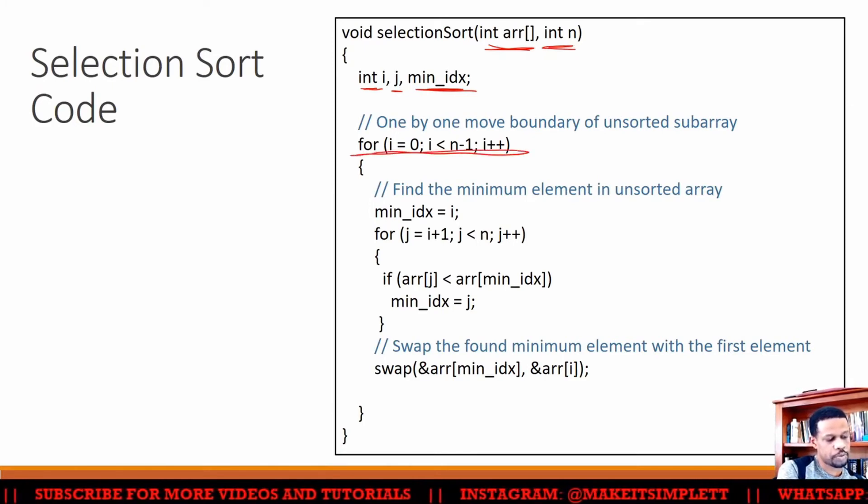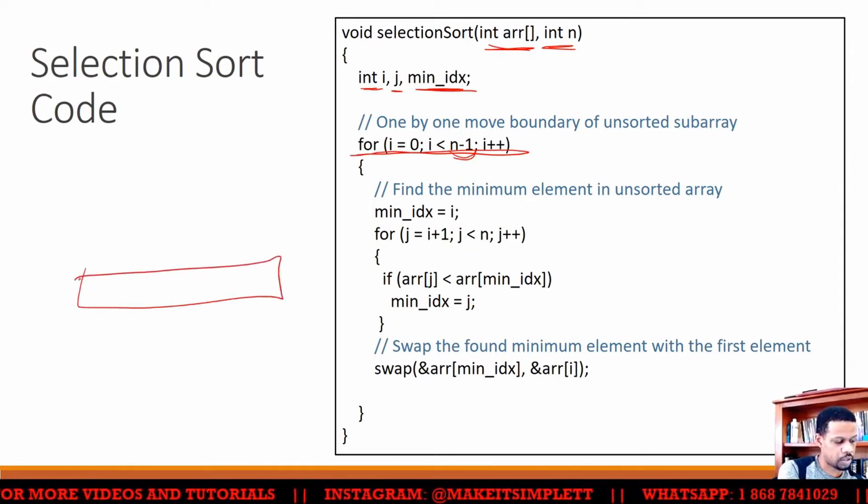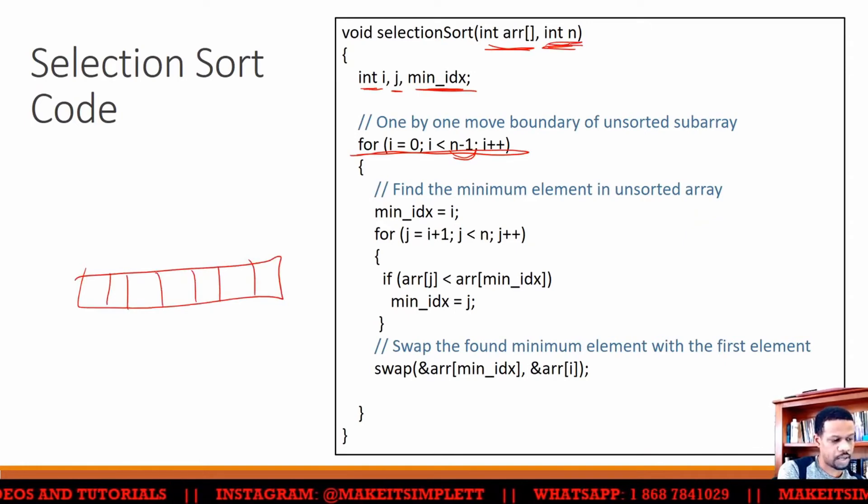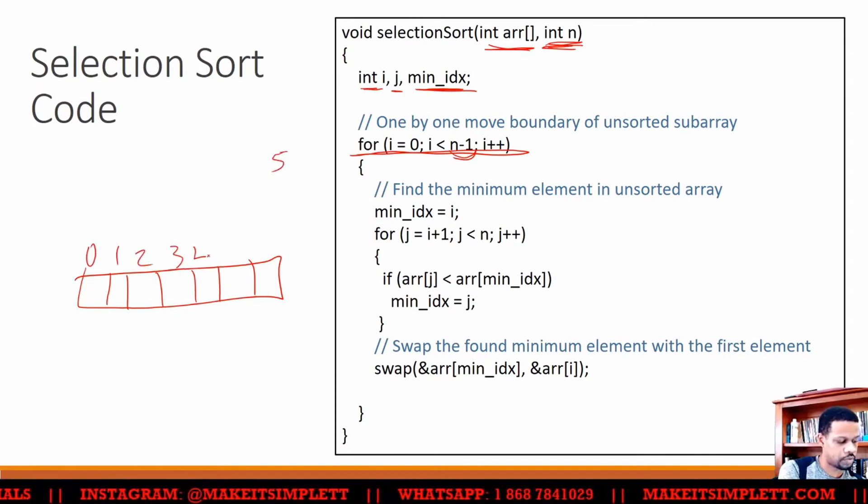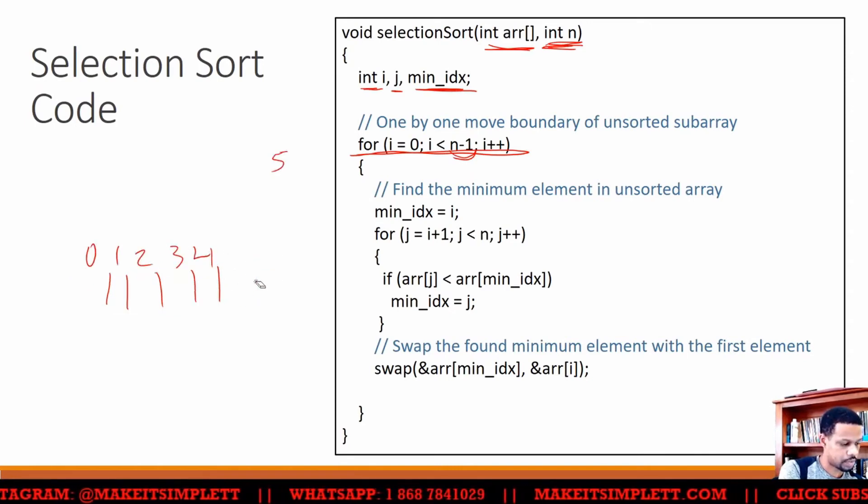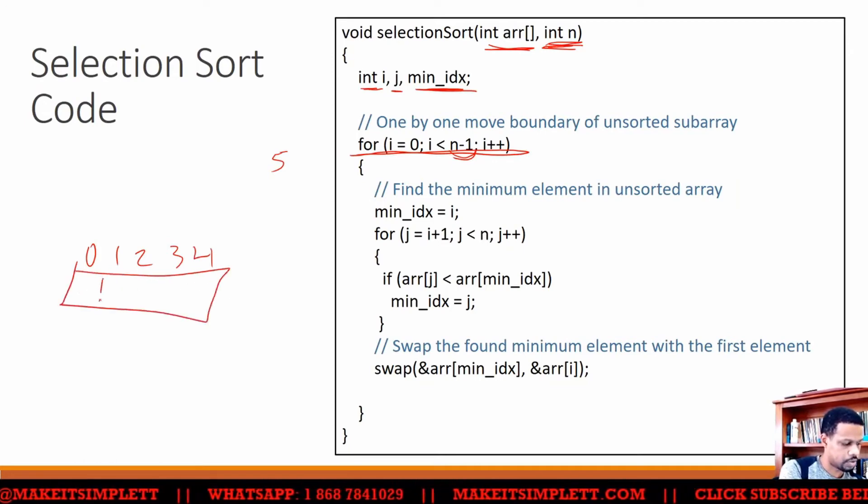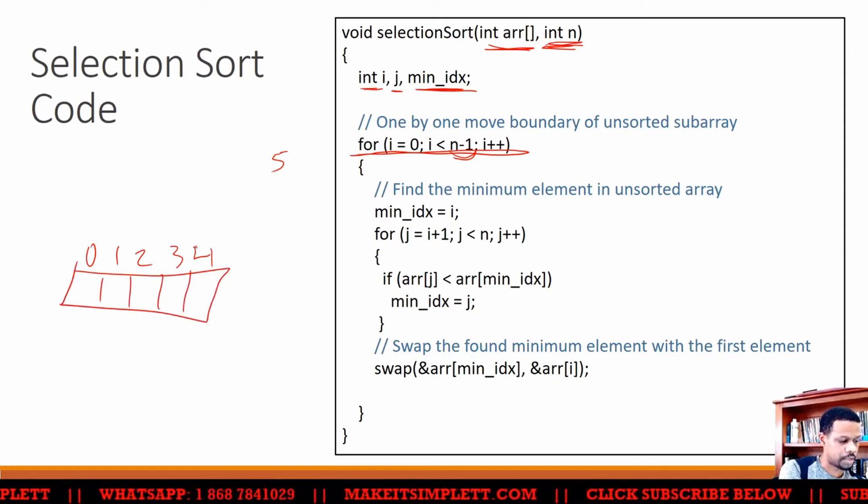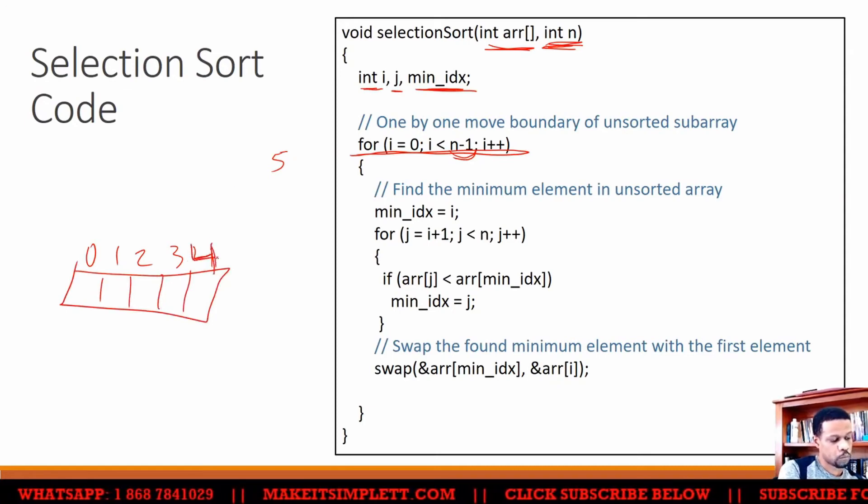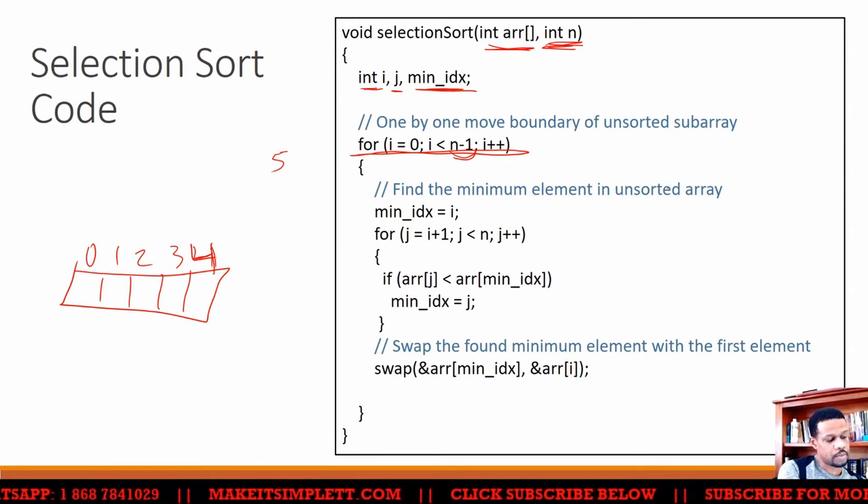...going to loop through the whole array. I'm going to go up until n minus 1 because if I have the whole array, any number of things in the array is five, I'm going to have 0, 1, 2, 3, 4. So that means I'm going to n minus 1. Then I have now finding minimum element in an unsorted array.